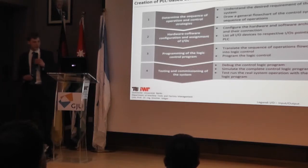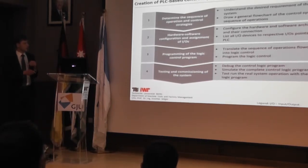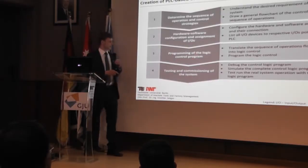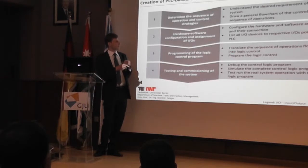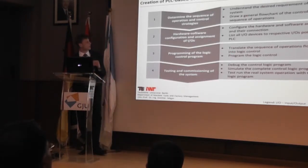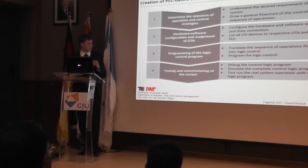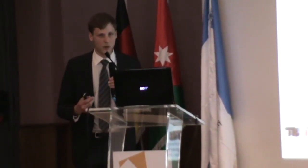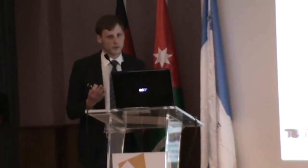Similar to this is the creation of a PLC-based control system. First, you determine the sequence of operation of the control strategies by drawing a flow chart. In a second step, you do hardware/software configuration, assigning every input and output a specific address in a list. After this, you program the control program according to the flow chart. A very important step is testing and commissioning — only if the PLC code is tested sufficiently can your factory run properly.